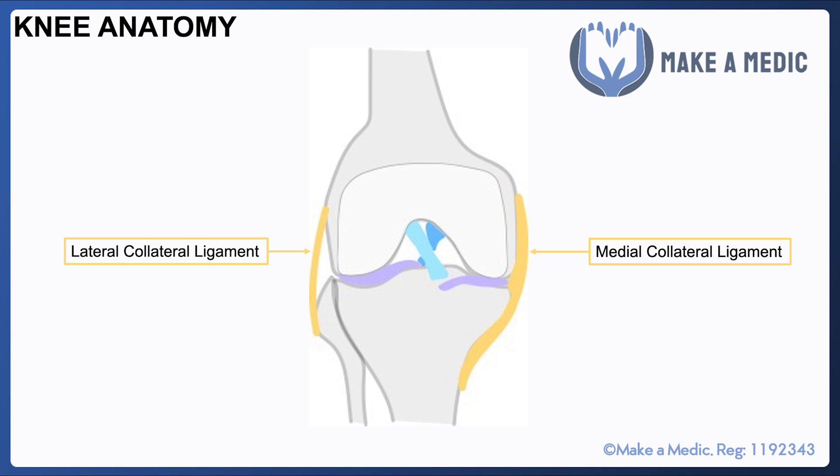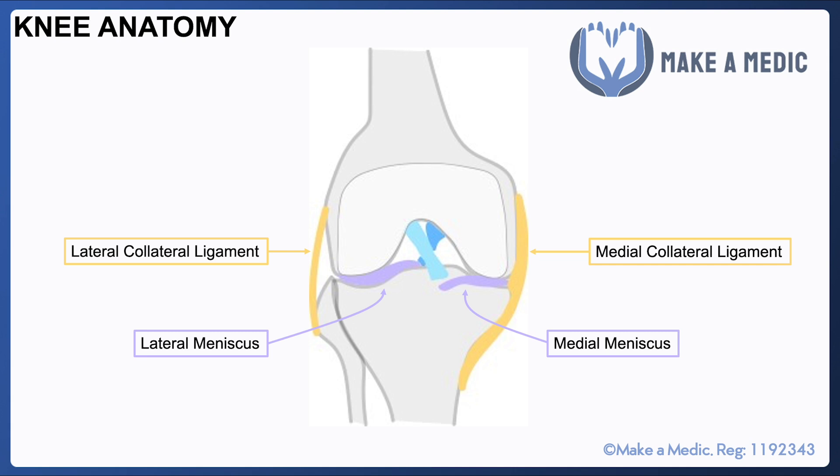The medial and lateral collateral ligaments prevent excessive valgus or varus forces across the knee. We then have the medial and lateral menisci, which are cuffs of cartilage that cushion the distal end of the femur as it sits on top of the tibia.